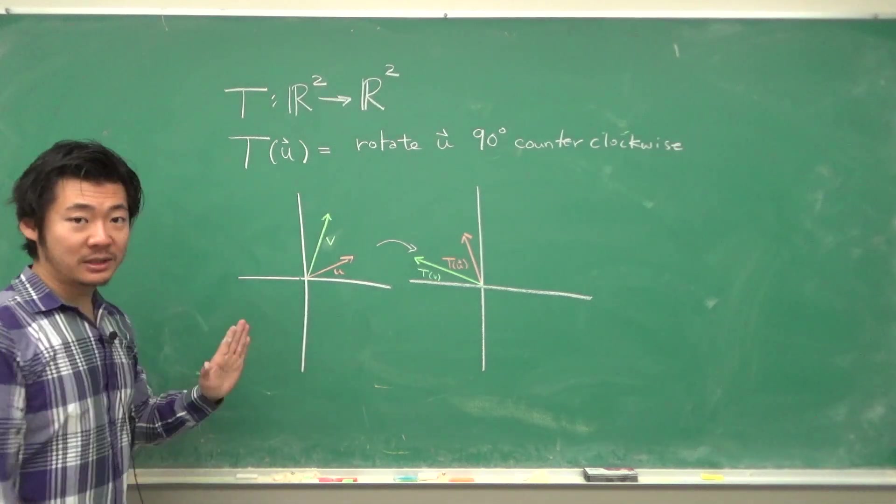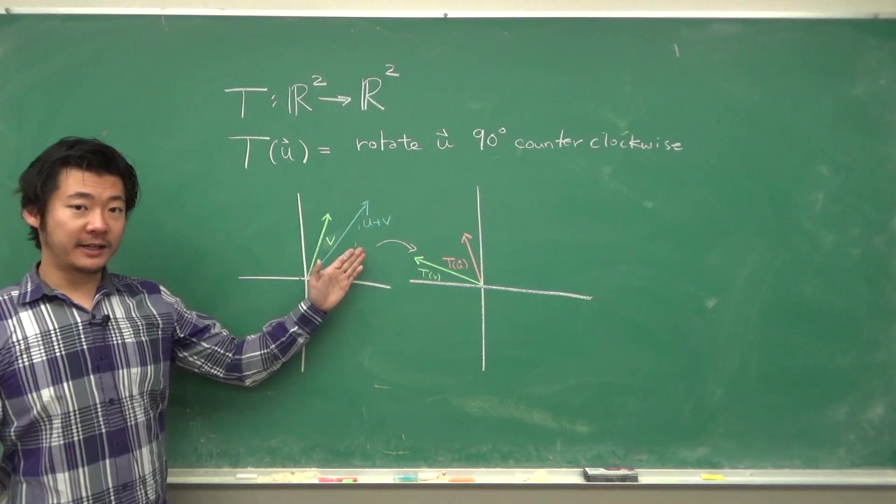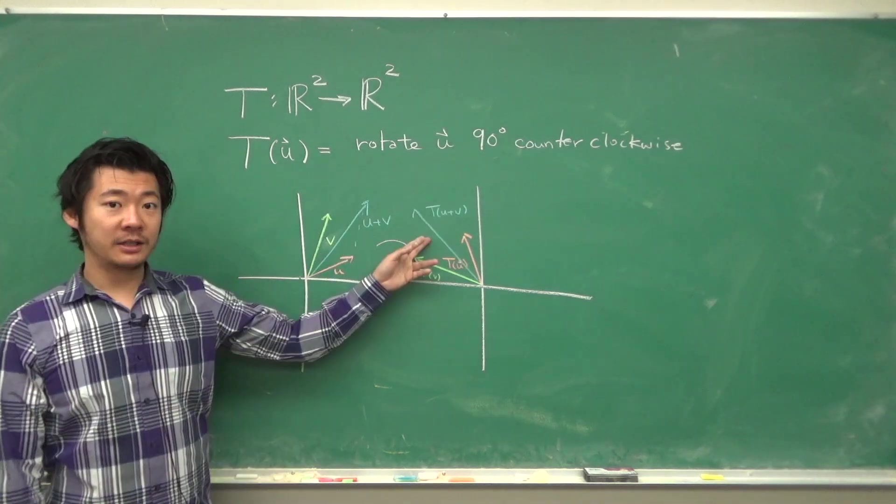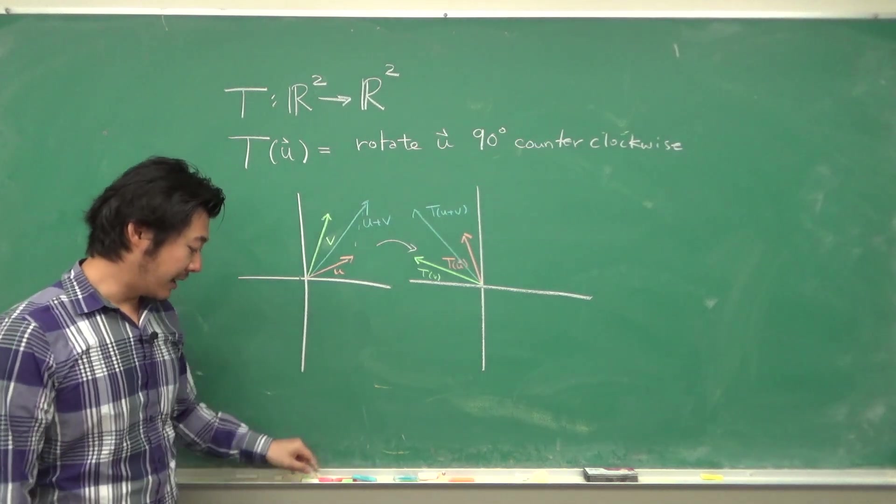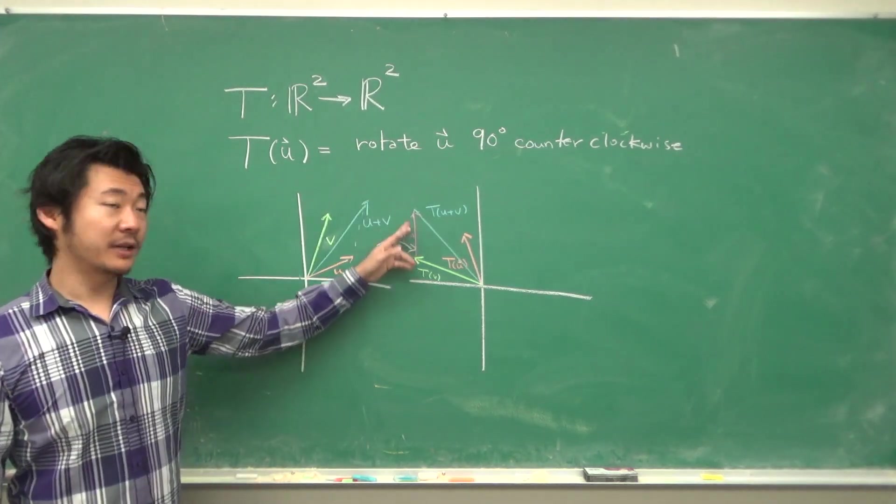And then u plus v is this vector. If we rotate it 90 degrees, we get T(u + v). But notice that T(u + v) is the same as T(v) + T(u).